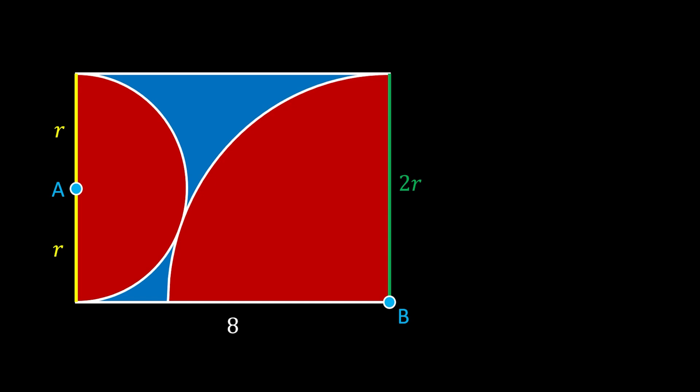Now we can say that this red area is equal to the area of this smaller half circle plus the area of this bigger quarter circle. The area of our smaller half circle will be equal to one half of r squared π and the area of our bigger quarter circle will be equal to one fourth of the squared radius of our bigger circle which in this case is 2r squared π.